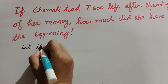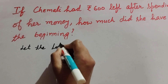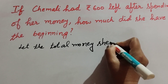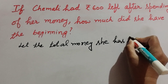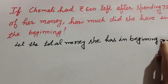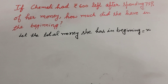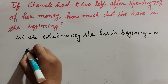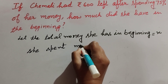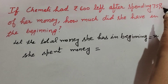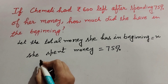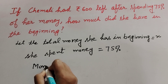Let's start. We suppose the total money she has in the beginning equals x. She spent 75% of her money, and the money that was left is RP 600.